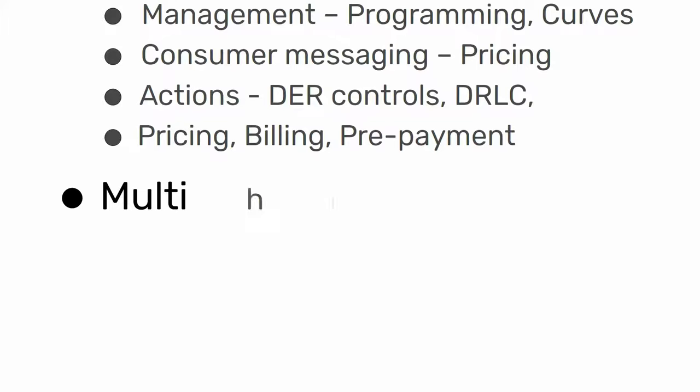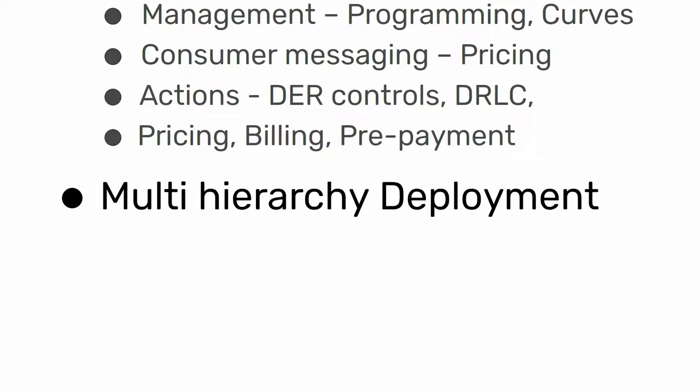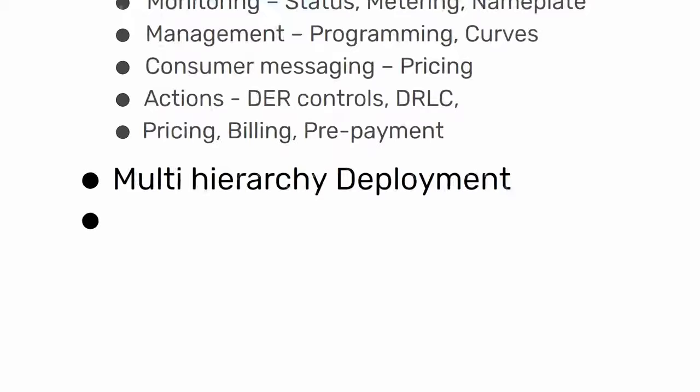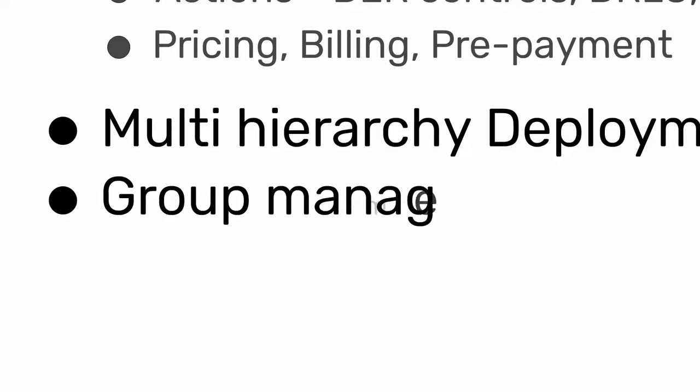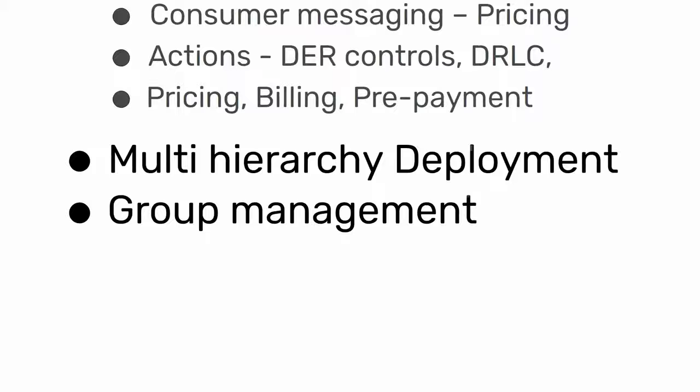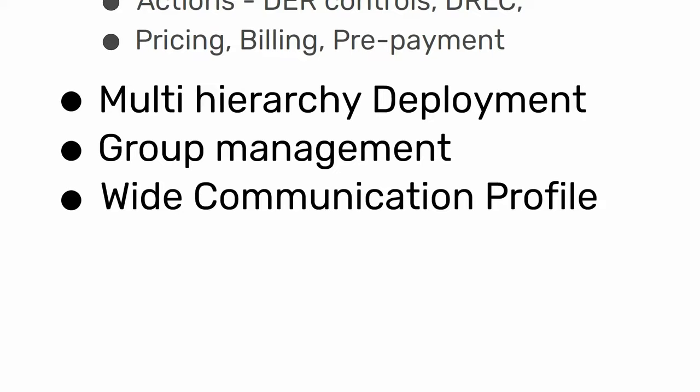Kolki.io can support multi-hierarchy communication — that is, direct DER communication with utility control center, or through a DER aggregator or retailer who manages multiple DER consumers. For utilities, Kolki.io can control single DER assets or multiple assets in a group. Groups can be dynamically created based on electrical network topology, consumer segments, or DER programs defined by the utility.